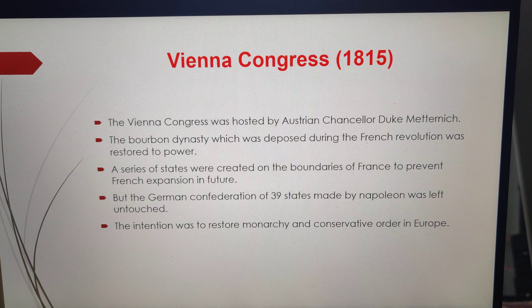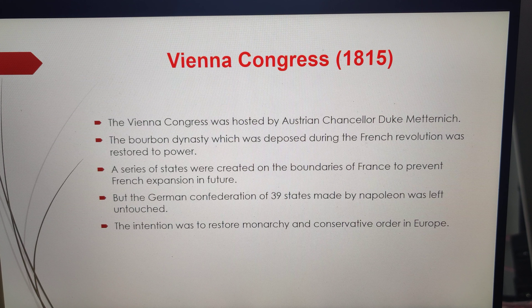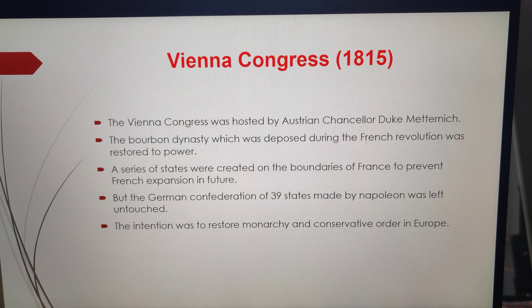During the years following 1815, the fear of repression drove many liberal nationalists underground. Secret societies sprang up in many European states to train revolutionaries and spread their ideas. Italian revolutionary Giuseppe Mazzini became a member of the secret society of the Carbonari. He founded two more underground societies: Young Italy in Marseilles and Young Europe in Bern.